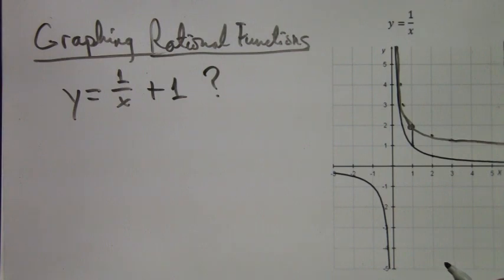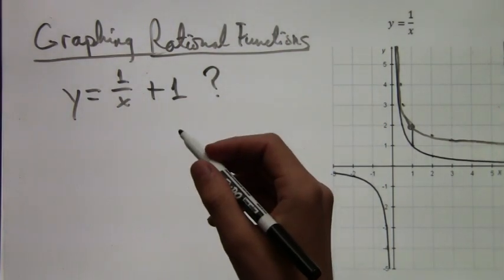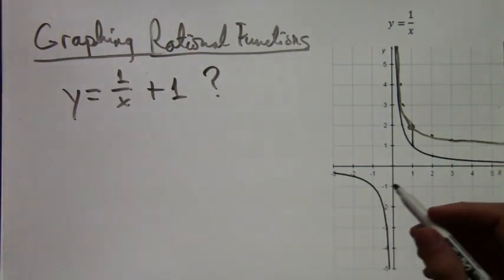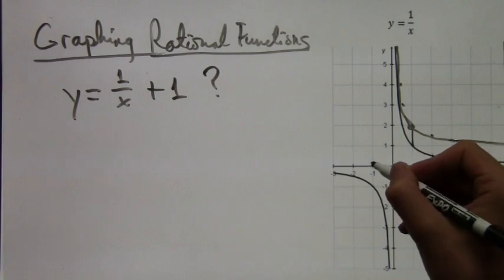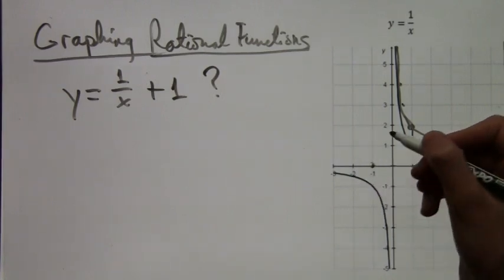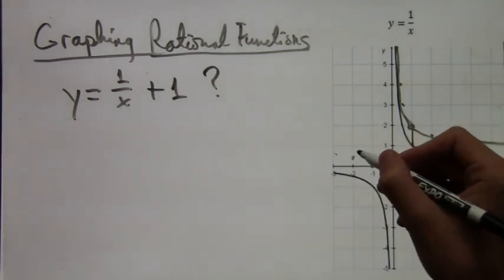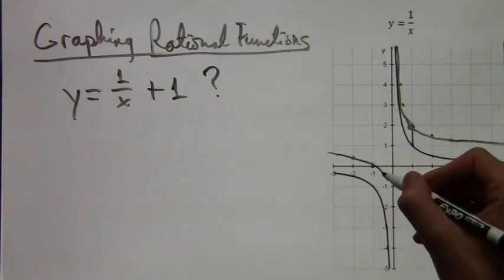So really, to construct any other rational function, we're going to use this as a sort of basis. And just remember the basic form of what y equals 1 over x looks like. And we're going to shift it around and change it a little bit. But the general shape is the same.